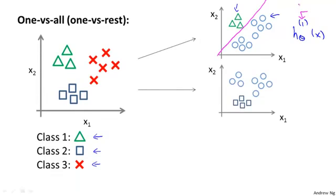Next, we do the same thing for class 2. We're going to take the squares and assign the squares as the positive class, and assign everything else, the triangles and the crosses, as the negative class.